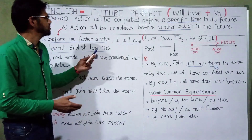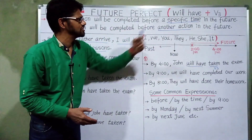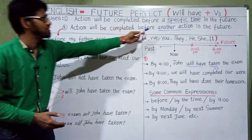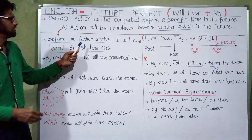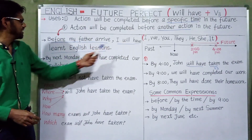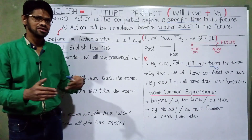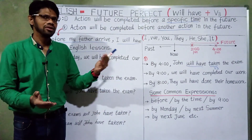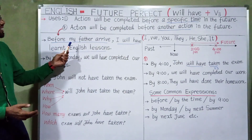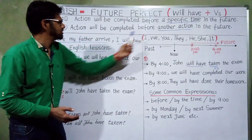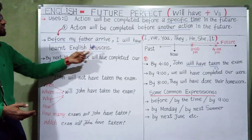Here is another use of future perfect tense: the action will be completed before another action in the future. Look at this example — before my father arrived, I will have learnt English lessons. So this is an action completed before another action.